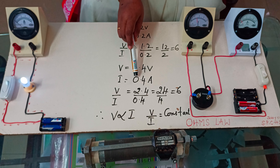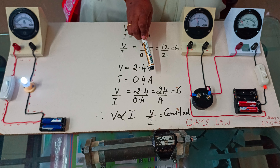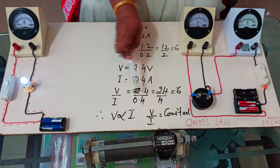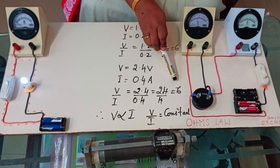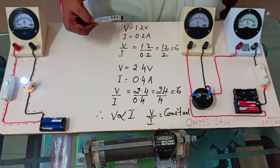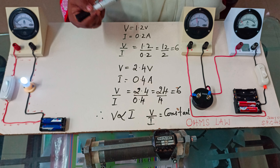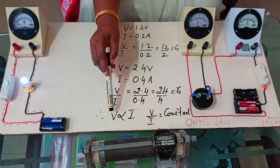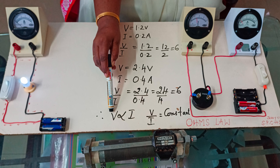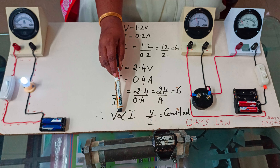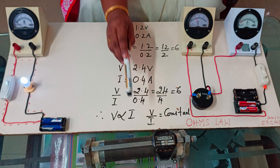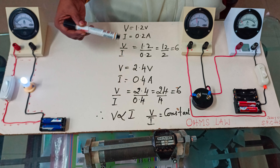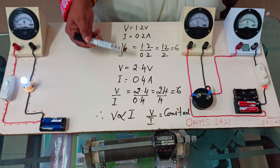You all know what does the battery do? What does the switch do? This is about the electric circuit. Now let us see the electric circuit of Ohm's law. This is nichrome wire. It is connected parallel to the voltmeter, and the nichrome wire again is connected in series with the ammeter.